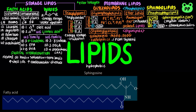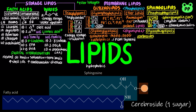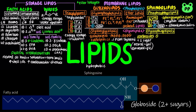Sphingomyelin is especially prominent in myelin, a membrane sheath that surrounds and insulates the axons of some neurons, speeding up action potentials. The remaining sphingolipids, known as glycosphingolipids, have sugars as their polar head group and can be further classified into three subclasses. Cerebrosides have a single sugar as their head group: neuron membranes usually have galactose, whereas non-neuron membranes usually have glucose. Globosides are glycosphingolipids with two or more sugars, usually glucose, galactose, or N-acetylgalactosamine. Cerebrosides and globosides are sometimes called neutral glycolipids, as they have no charge at physiological pH.